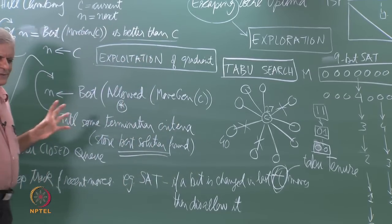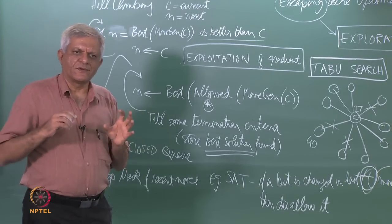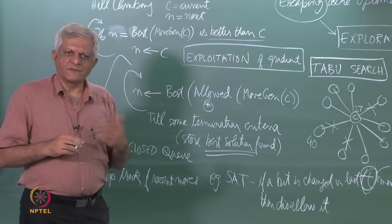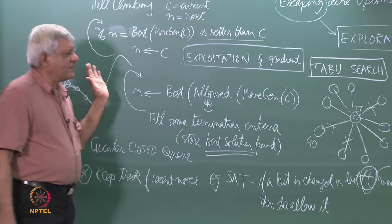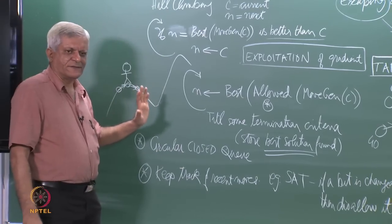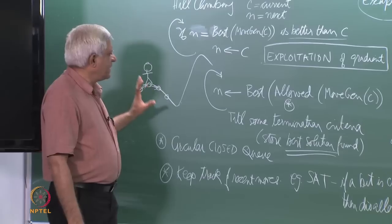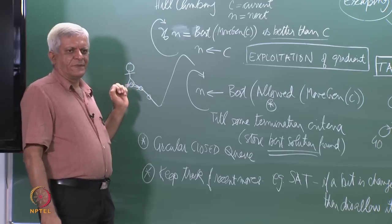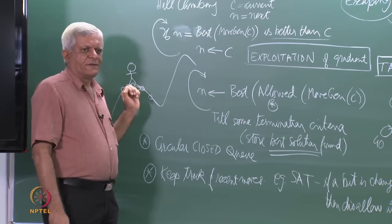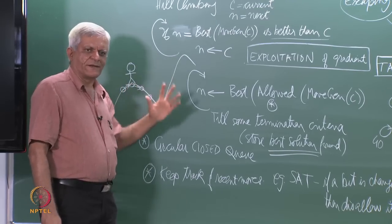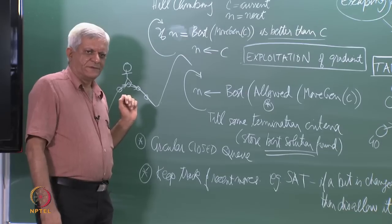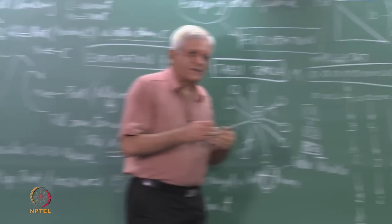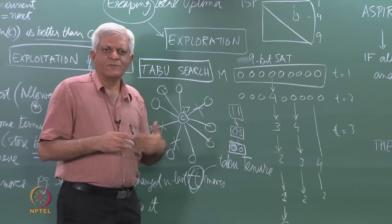You can see that some of this design of such algorithms is kind of an art — you are trying to devise algorithms which will give you good solutions. What taboo search does is give you a deterministic mechanism to go past local maxima and explore the state space further. It does this by having the taboo tenure which says that for a certain period of time do not make the same move again.